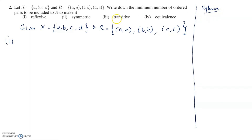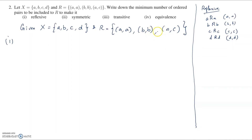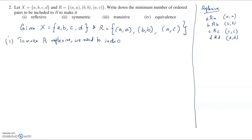For reflexive, you need a R a, b R b, c R c, d R d — which means you need the ordered pairs (a,a), (b,b), (c,c), and (d,d). What's missing is (c,c) and (d,d). Therefore to make R reflexive, we need to include (c,c) and (d,d).